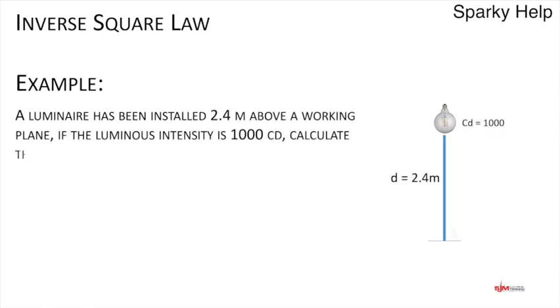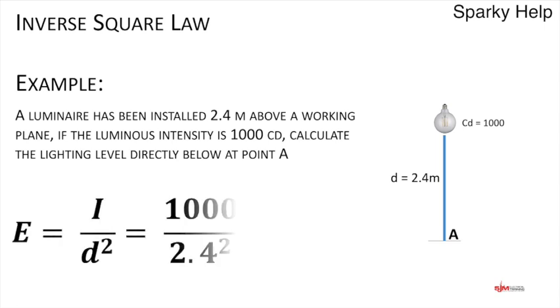Let's look at an example. A luminaire above a surface 2.4 meters, its luminous intensity is 1000 candelas. Calculate the light level directly below. There's our light, there's our distance. We put our figures in: 1000 divided by 2.4 meters squared. That gives an answer of 173.6 lux or lumens per meter squared. That's the light received directly below. Relatively straightforward.